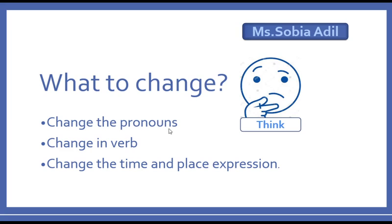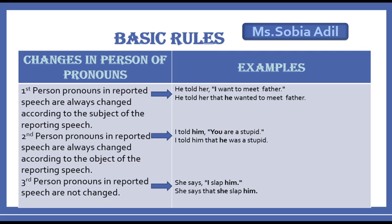The first rule you have to follow is changes in person of pronouns. First person pronouns in reported speech are always changed according to the subject of the reporting speech. For example: 'He told her, I want to meet father.' The first person pronoun 'I' is changed according to the subject 'he' — so it becomes: 'He told her that he wanted to meet father.'